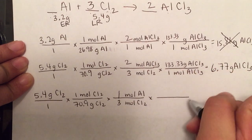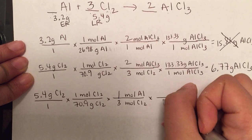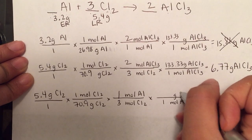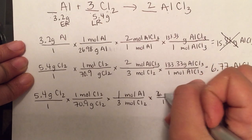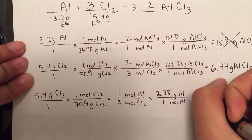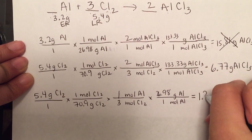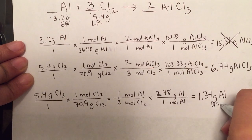Just 3 to 1, if we look at our equation. And then we can go from moles of aluminum to grams of aluminum. Just 26.98 that I got from the periodic table. I do the math. I get 1.37 grams of aluminum. Now that's aluminum used.